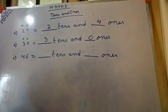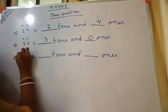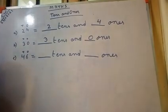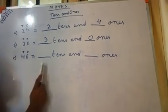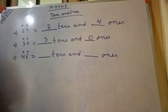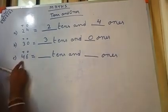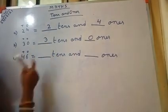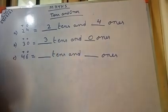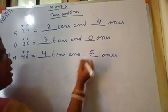Here it is 46. 46 equals to dash tens and dash ones. So what we will do? We will write T and O above — T here and O here. So 4 is in the tens place and 6 is in the ones place. We will write 4 because 4 is under tens place. So we write 4 tens and 6 ones. It is very easy.